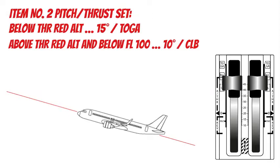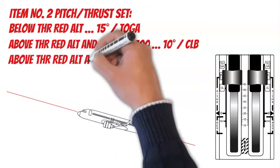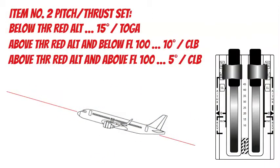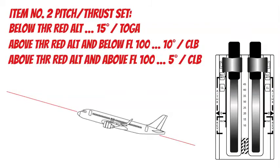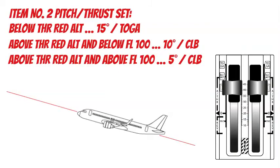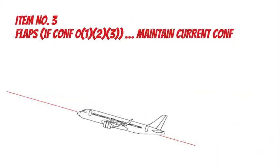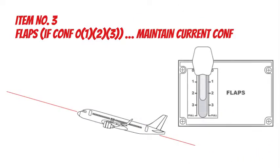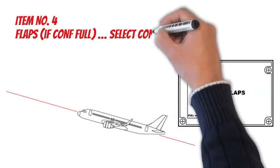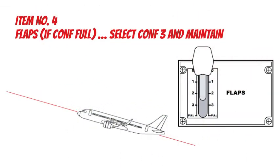Above thrust reduction altitude and above flight level 100: 5 degrees and CLIMB set. Item number 3: Flaps — if configuration 0, 1, 2, or 3, maintain current configuration. Item number 4: Flaps — if configuration FULL, select configuration 3 and maintain.